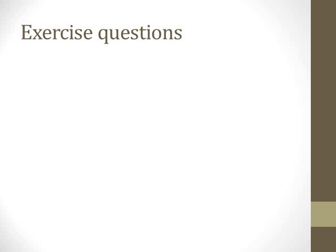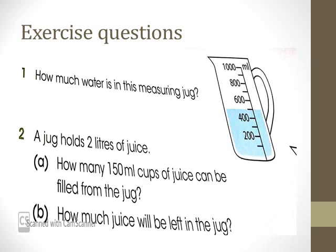We have exercise questions and we are going to study these from the topic 'Capacity', which is on page number 120 or 128 of Cambridge Primary Mathematics for Grade 3. We are going to study two questions today. Question one: how much water is in this measuring jug? Question two: a jug holds two liters of juice — part A: how many 150 ml cups of juice can be filled from the jug, and part B: how much juice will be left in the jug after completing part A?